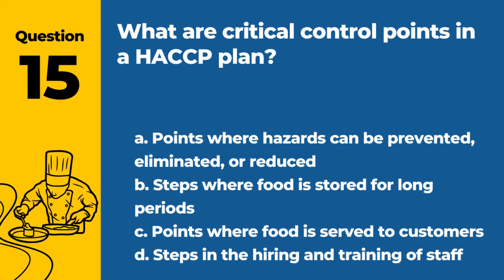Question 15. What are critical control points in a HACCP plan? a. Points where hazards can be prevented, eliminated, or reduced. b. Steps where food is stored for long periods. c. Points where food is served to customers. d. Steps in the hiring and training of staff. Answer: a. Points where hazards can be prevented, eliminated, or reduced. These are the critical control points in a HACCP plan.